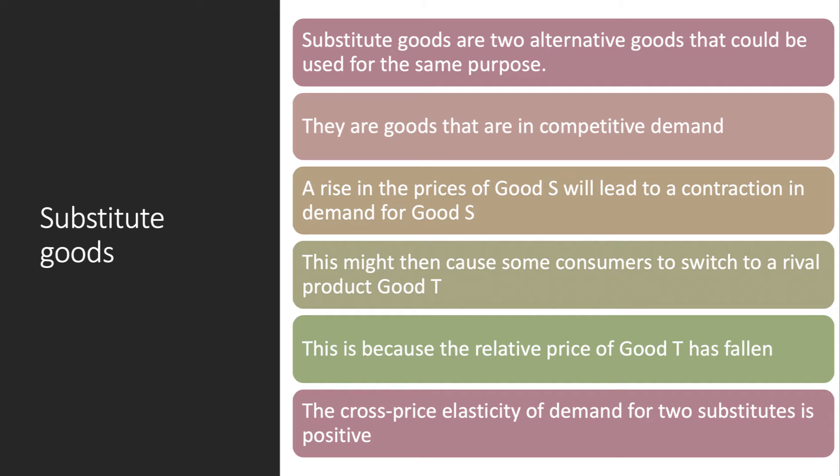Let's take an increase in the price of good S — this will lead to a contraction in the demand for good S. This might then cause some consumers to switch their demand to a rival product, good T. This is because the relative price of good T has gone down, and so some people will switch. Hence, an increase in the price of good S leads to an increase in the demand for good T.